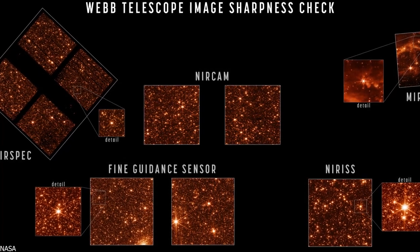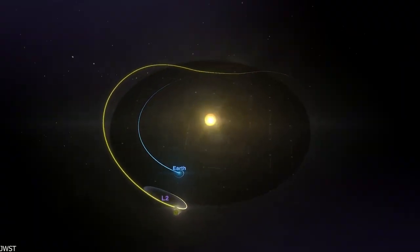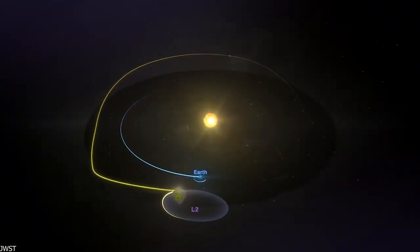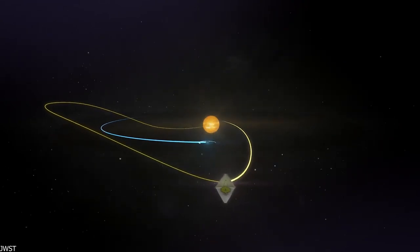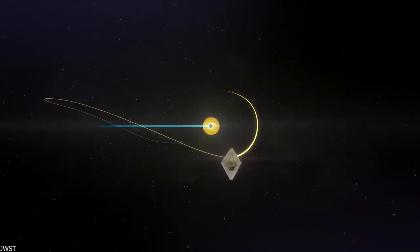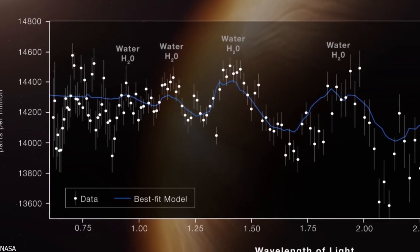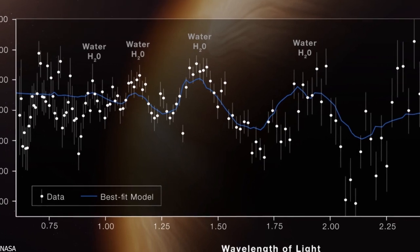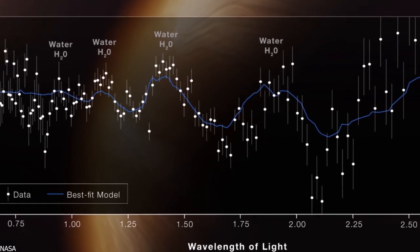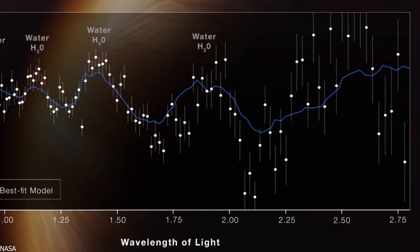Furthermore, Webb's extreme stability and orbital location around Lagrange Point 2, roughly a million miles away from the contaminating effects of Earth's atmosphere, provide an uninterrupted view and clean data that can be analyzed quickly. The highly detailed spectrum created by analyzing 280 individual spectra captured during the observation is just a taste of what Webb has in store for exoplanet research.